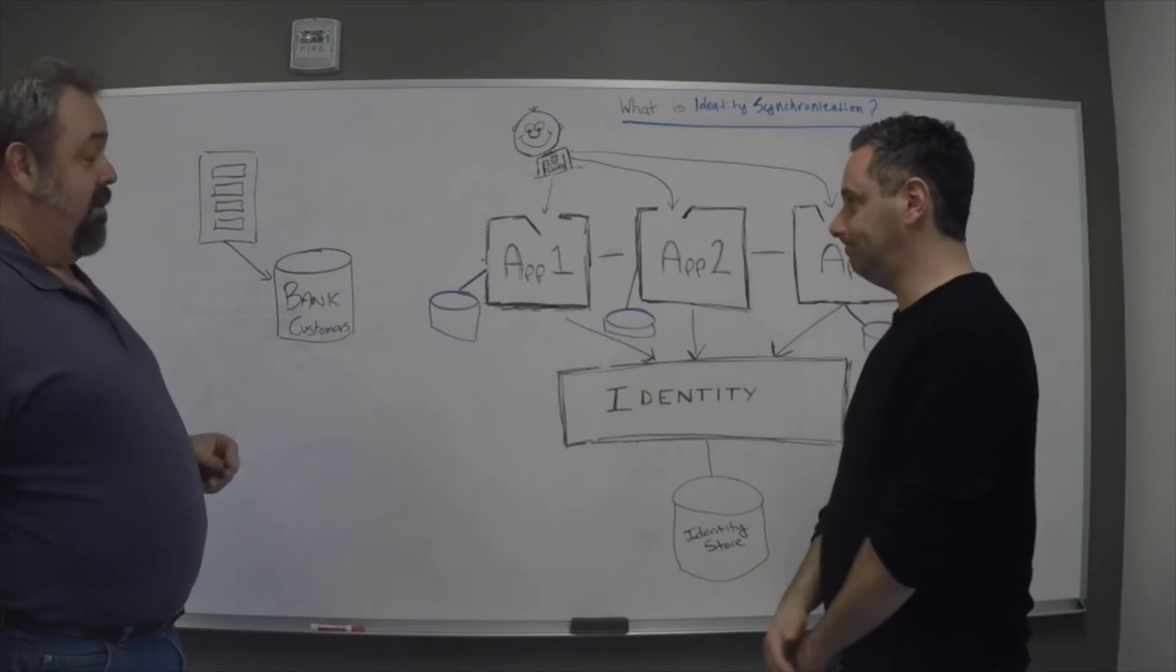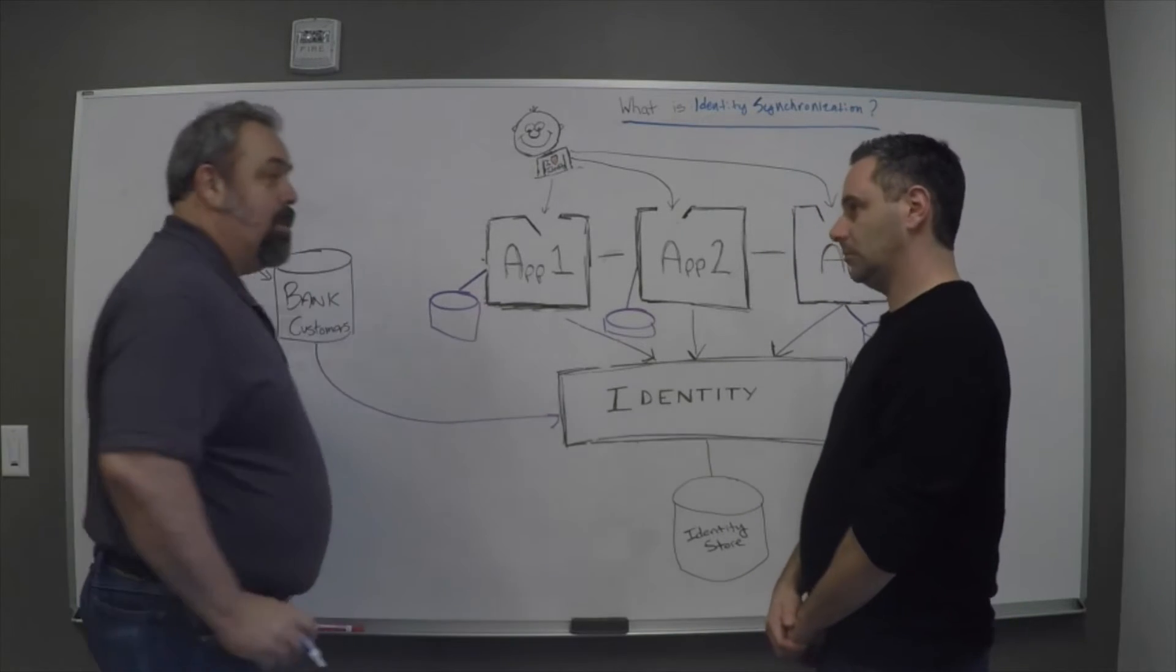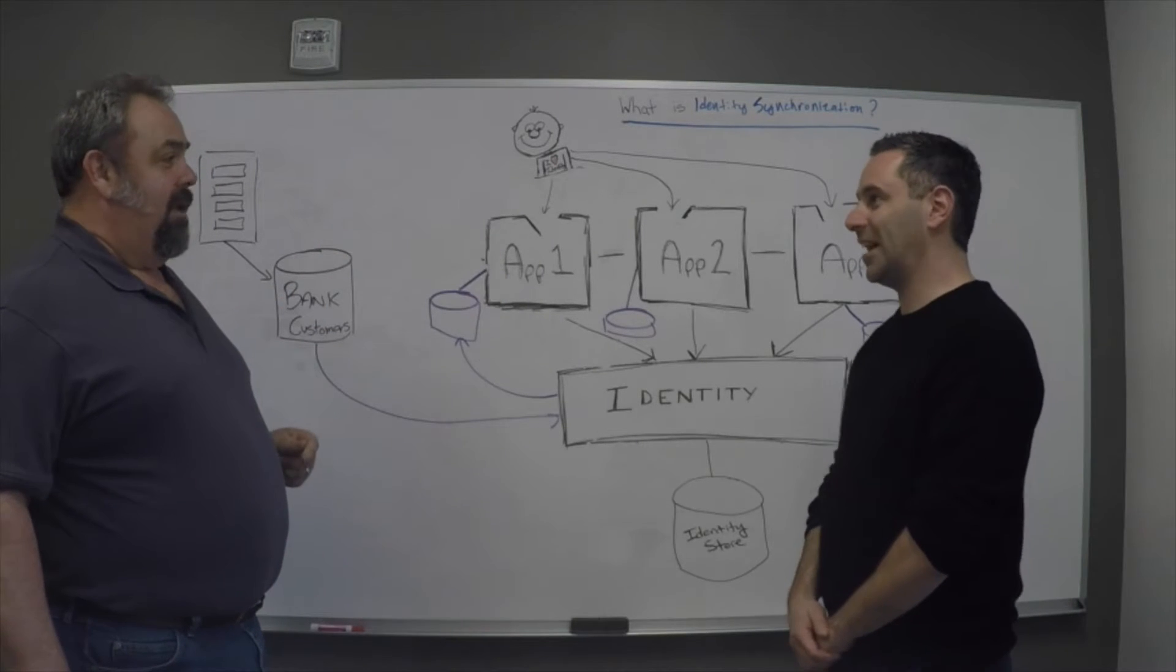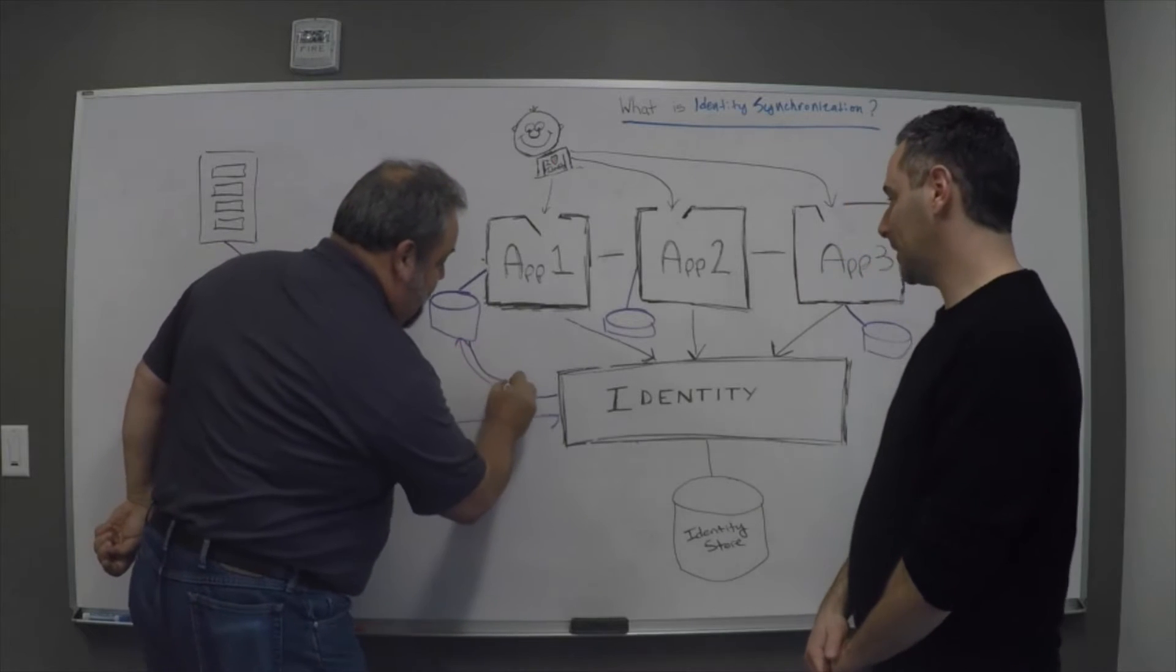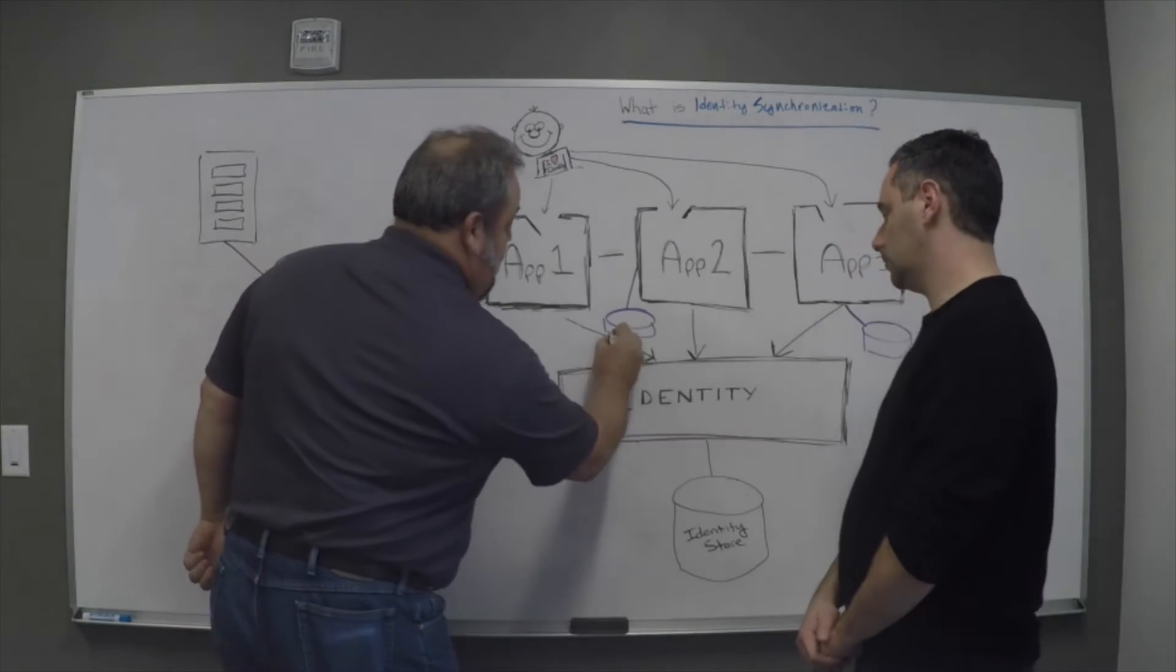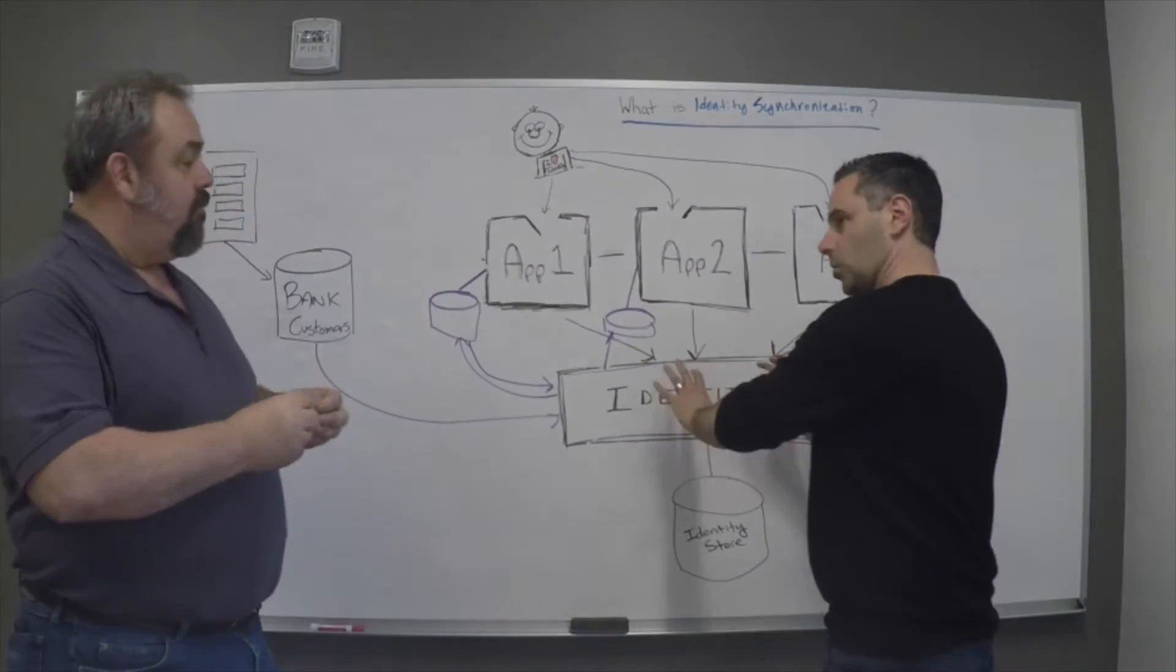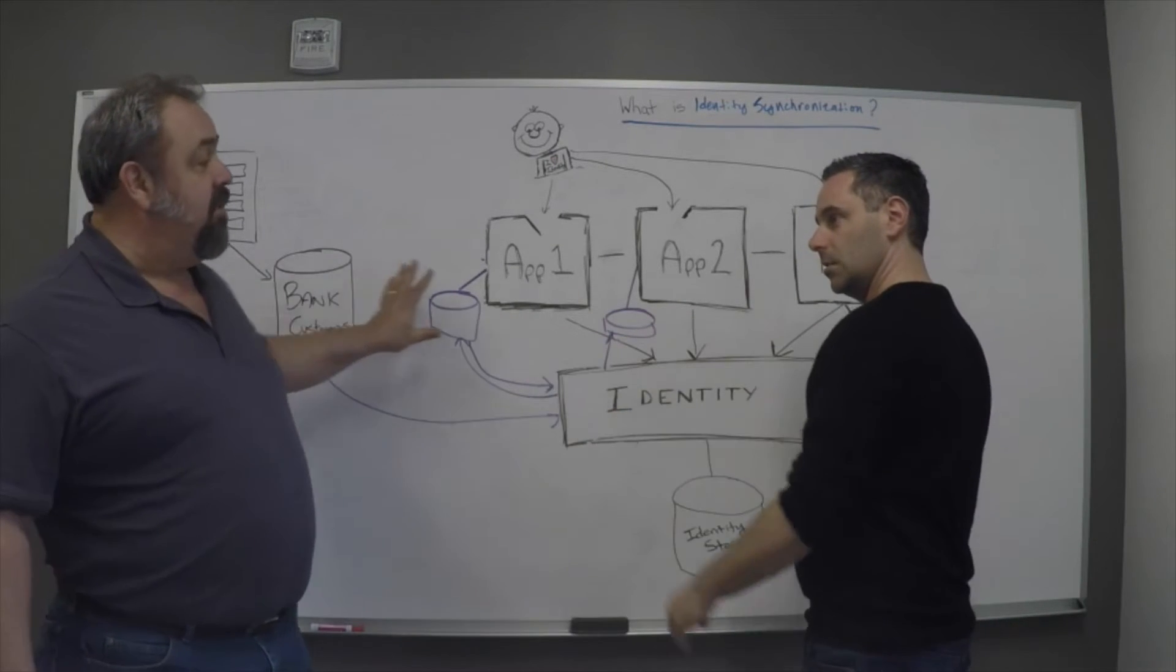So it is. Synchronization is the challenge that we've got to be able to take the information from our customers and put the right information in the right places. So we may be copying some up here into our credit application. However, we may also need to take certain information from the credit application, like for example their credit score, in order to put information into the home mortgage application, and in fact to the checking application. So we're orchestrating the synchronization of identity across all of these different stores.